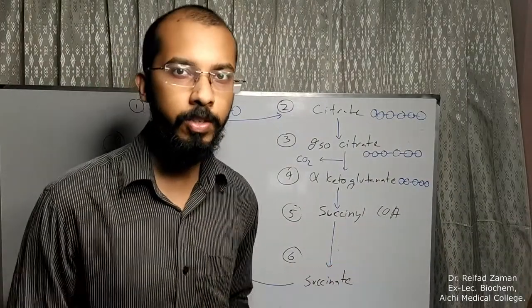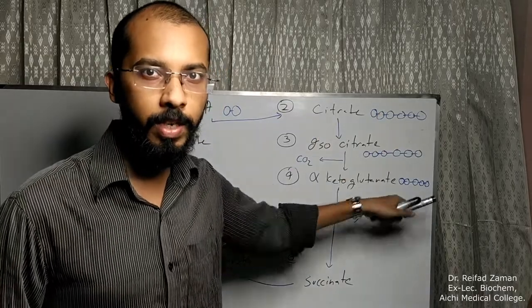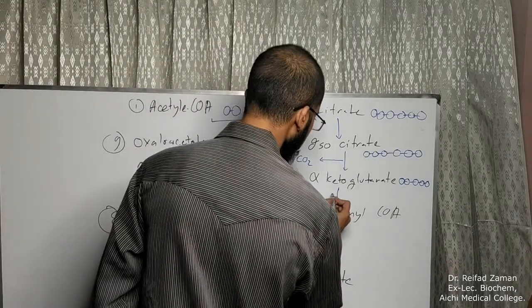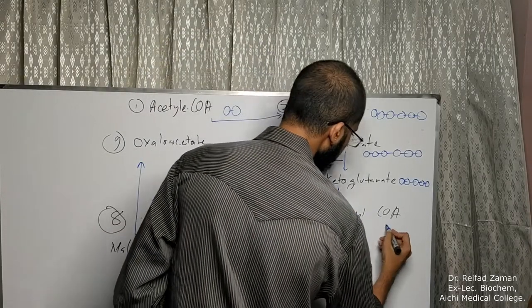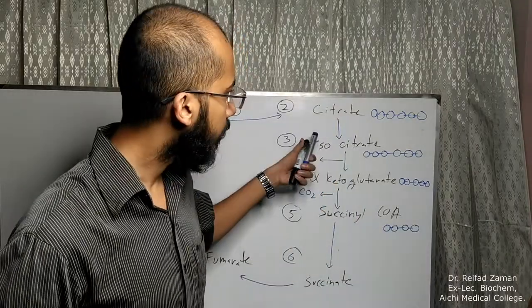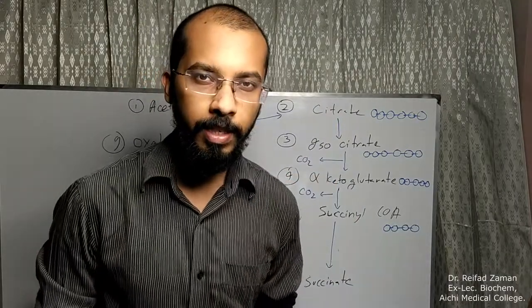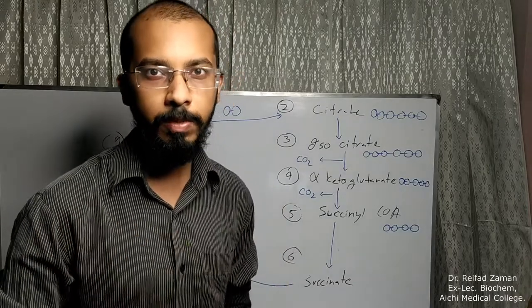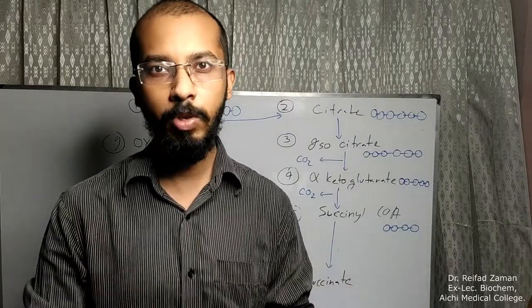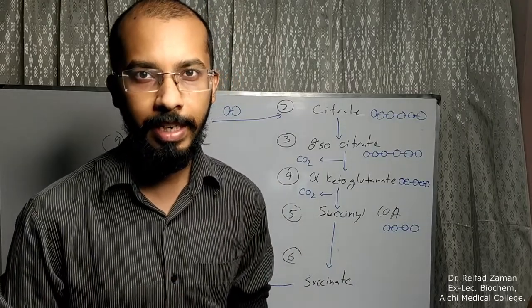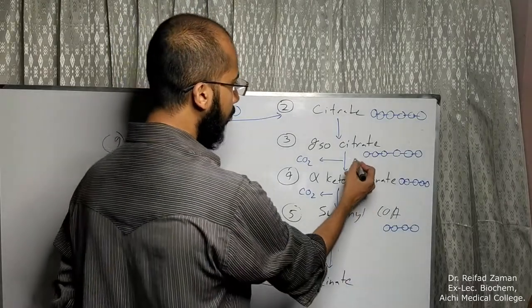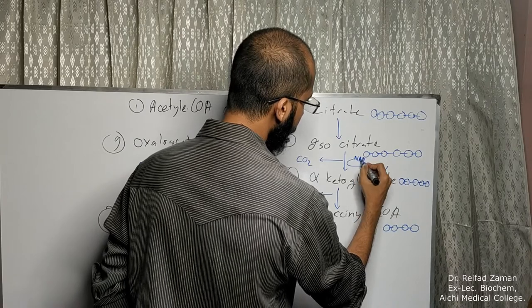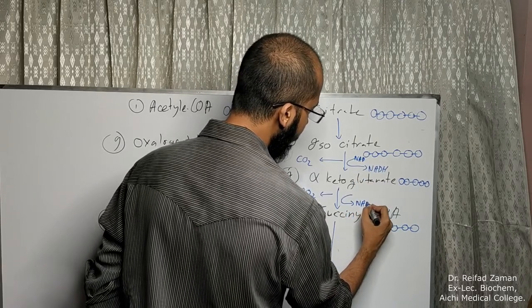This five-carbon alpha-ketoglutarate again loses another carbon dioxide and gets converted into the four-carbon succinyl-CoA. Now in both of these reactions — the isocitrate and alpha-ketoglutarate steps — in addition to releasing carbon dioxide, they also lose a hydrogen atom. These hydrogen atoms are picked up by NAD molecules, and this produces NADH. So over here we are going to get an NADH, and here as well we are going to get another NADH.